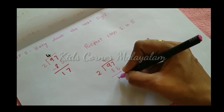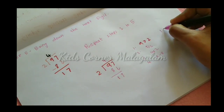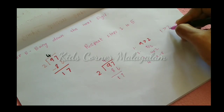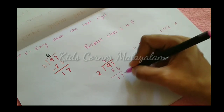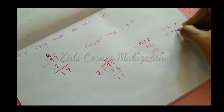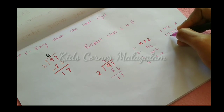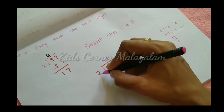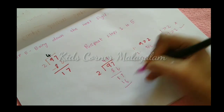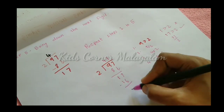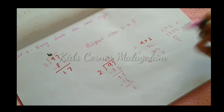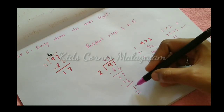We compare the number. Is 1 greater than 2? No, that is not correct. So we look at the full number: 17 is greater than 2. Then we divide: 17 divided by 2.